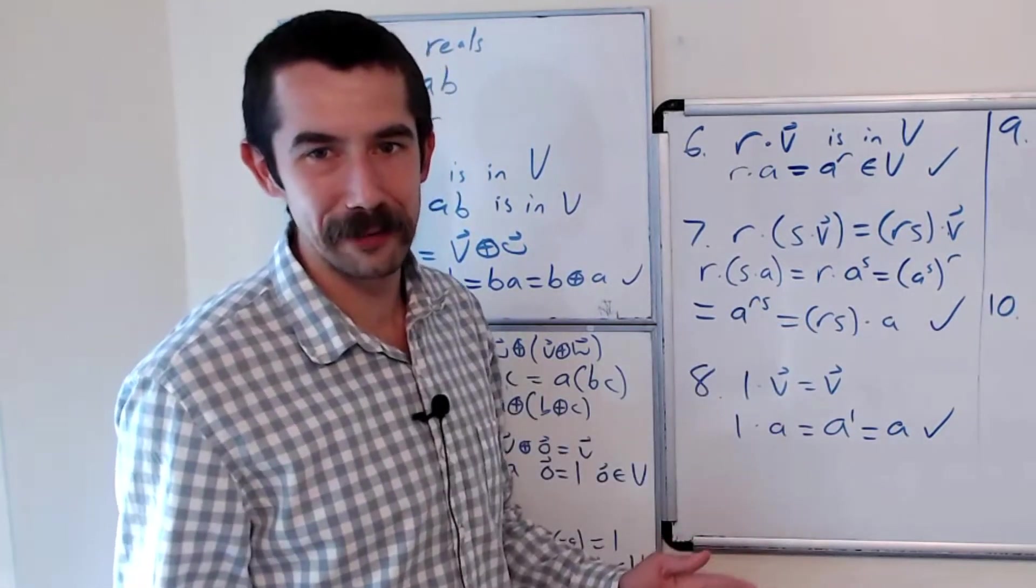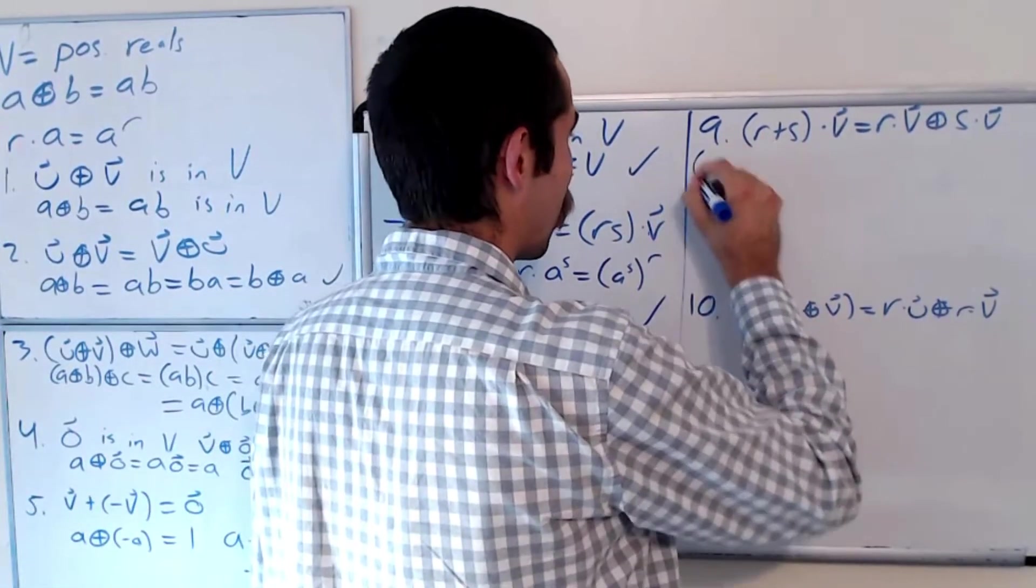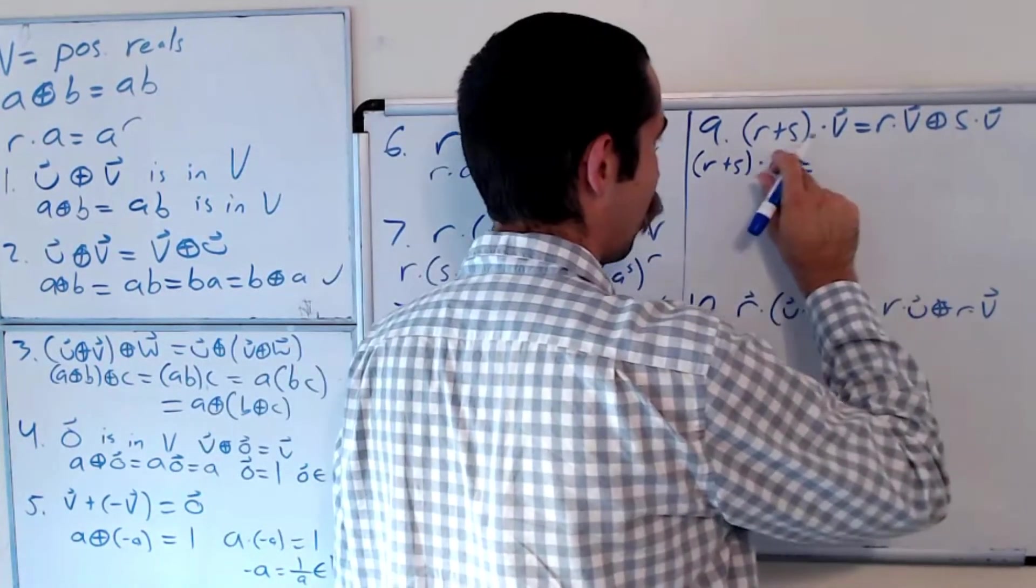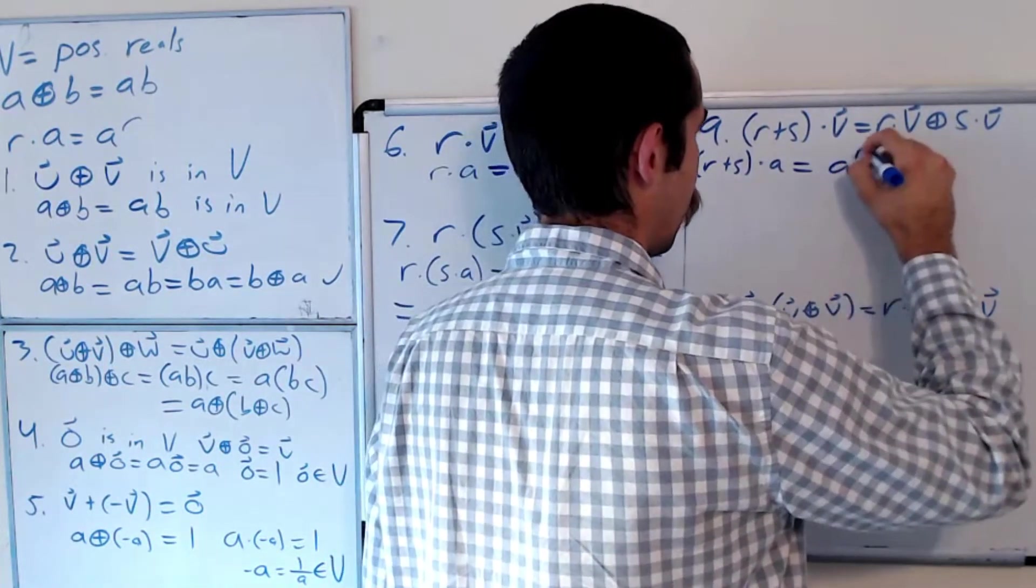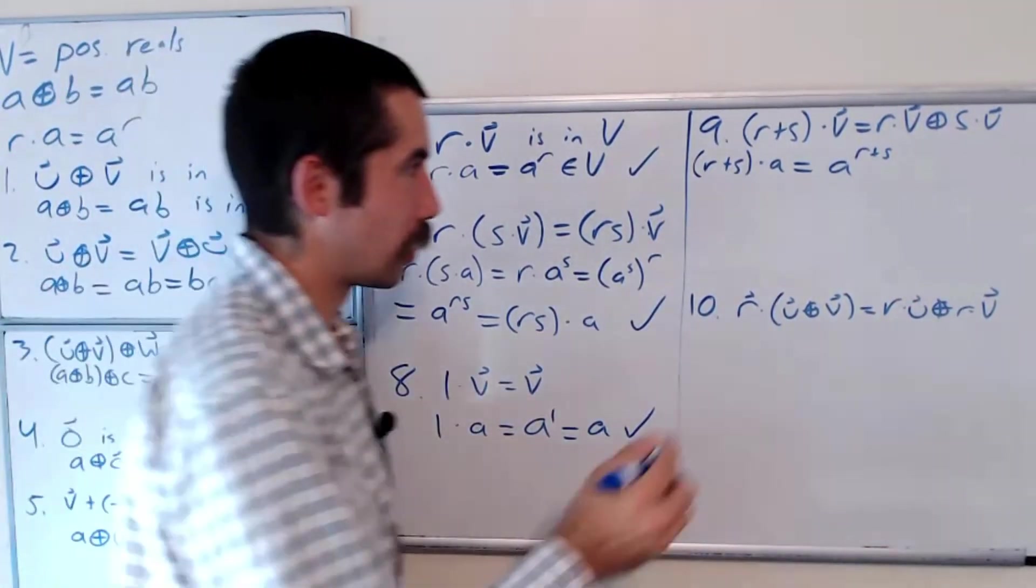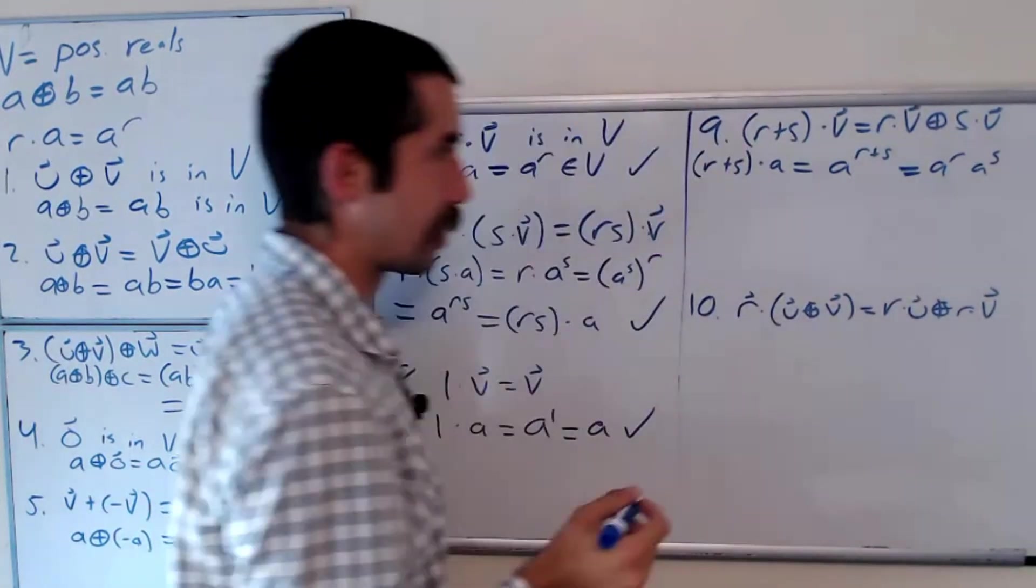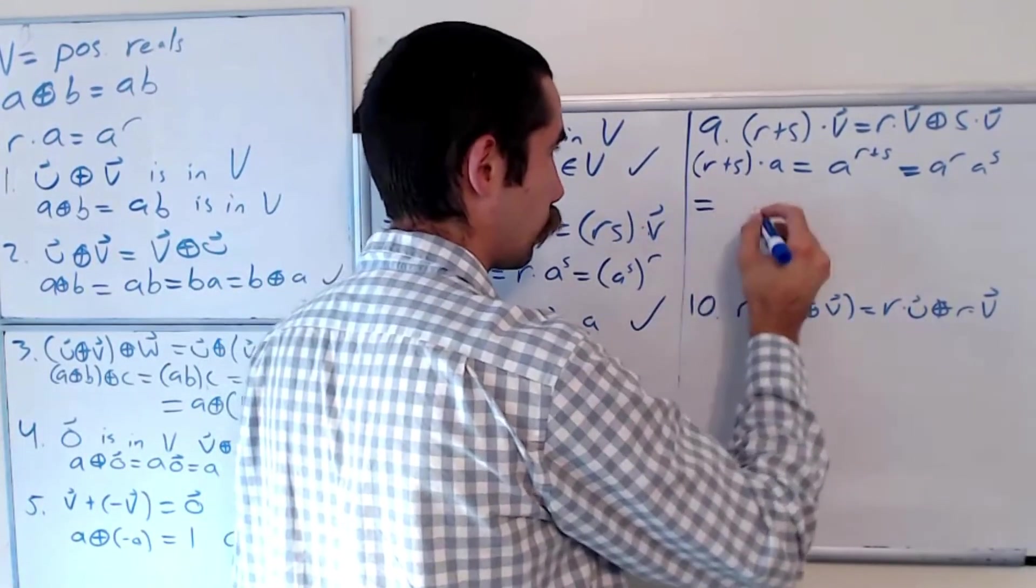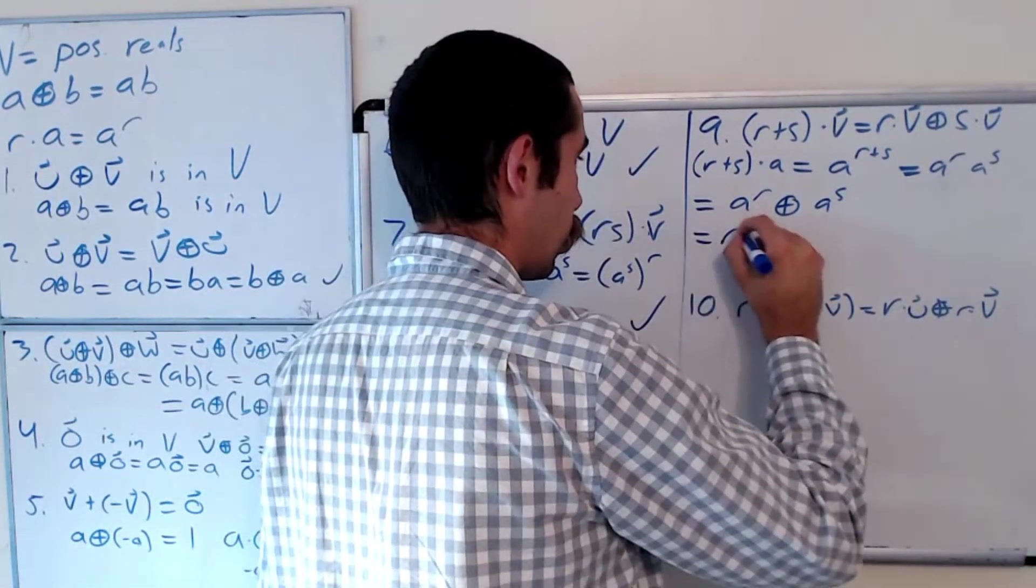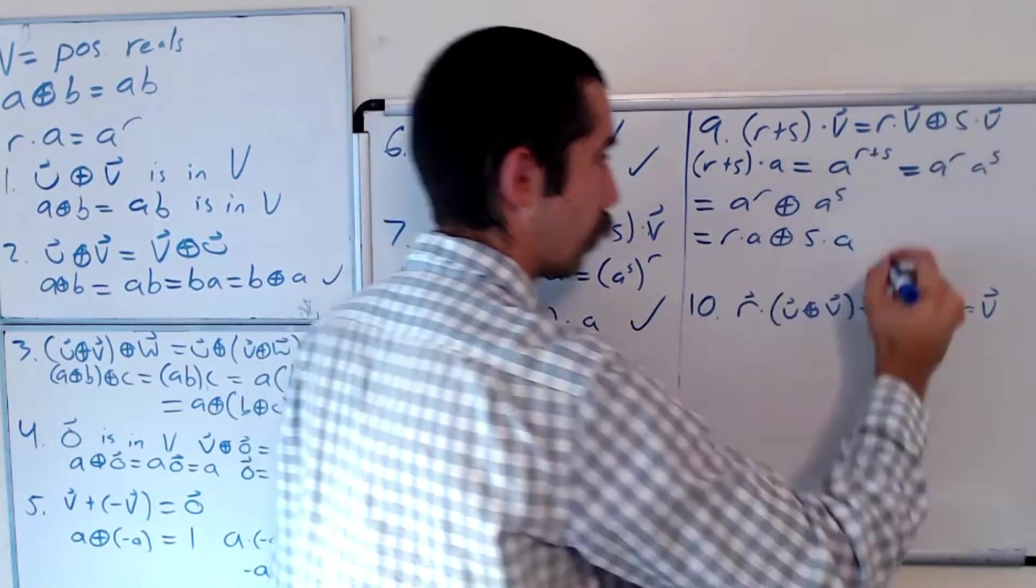Two to go. Let me know in the comments if you're still with me. I know this is kind of a long problem. So we want to do (R+S)·A. By definition, this is A^(R+S). But we know with properties of exponents, we could break this apart. So this is A^R times A^S, which is equal to A^R ⊕ A^S, which is equal to R·A ⊕ S·A. So 9 holds.